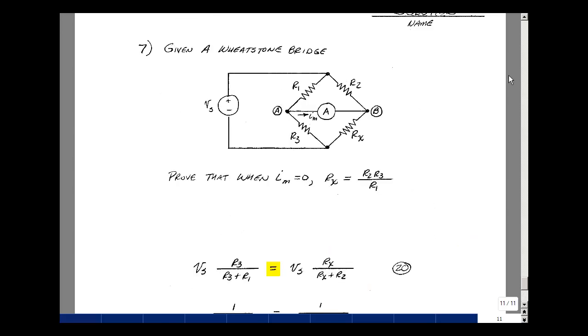Problem number seven is to prove the Wheatstone Bridge condition. And that is if the current in this meter is zero, then the resistor R sub x is equal to R2 times R3 divided by R1. So we can actually make this an unknown resistor and use this as an ohmmeter. How are you going to prove this? Well, when the current is equal to zero here, the current in R1 is the same as the current in R3, and likewise R2 and R sub x have the same current. So I could use voltage divider. The voltage across R3 would be R3 over R1 plus R3 times V sub s. And the voltage across R sub x would be R sub x over R2 plus R sub x times V of s. Because again, the current is the same in these two resistors. But because there is a short here, effectively, there's also zero volts. That makes these two voltages equal to each other. That was worth 20 points if you had that step.